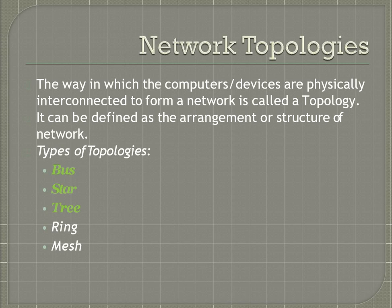The next factor is flexibility. Flexibility signifies that the network must be flexible enough — it should be easy to extend or reconfigure. Reconfiguring a network means rearranging the existing network or adding or removing one or two nodes. Flexibility is also very important before selecting a topology.